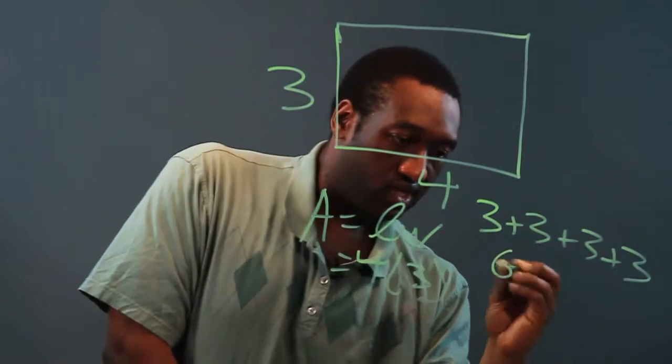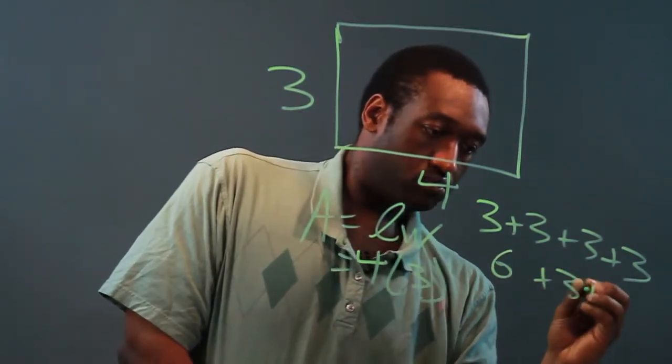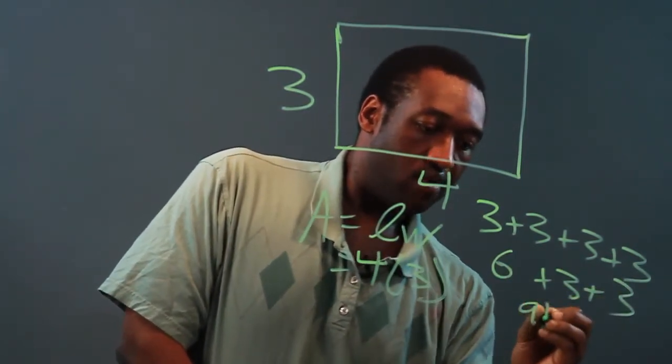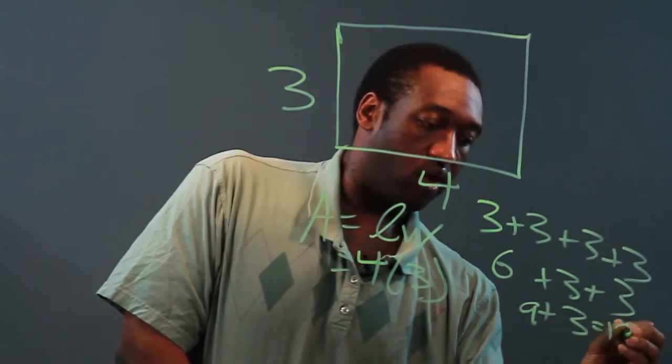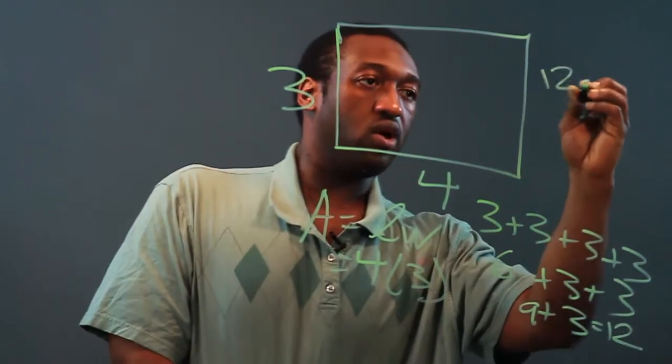3 plus 3 is 6, plus 3 is 9, plus 3 is 12. So our answer would be 12 square units.